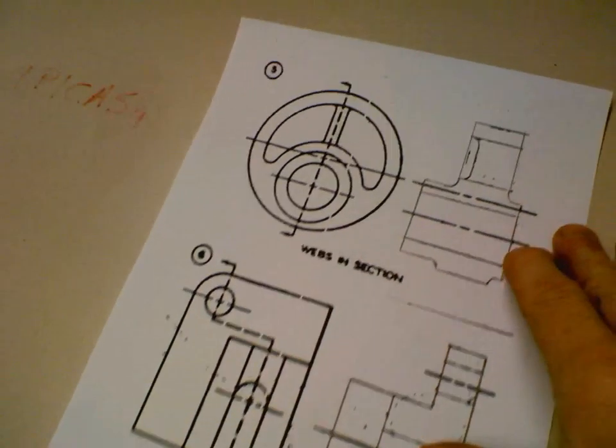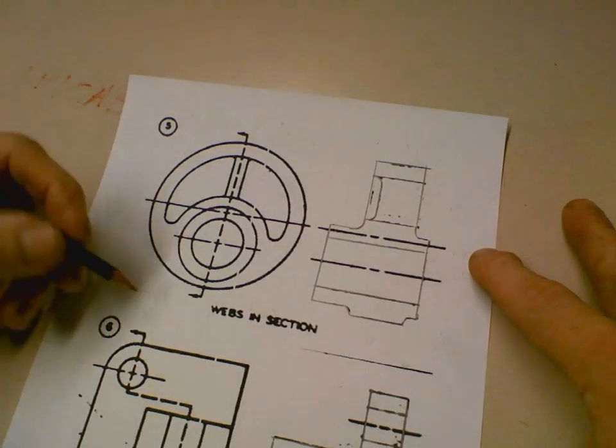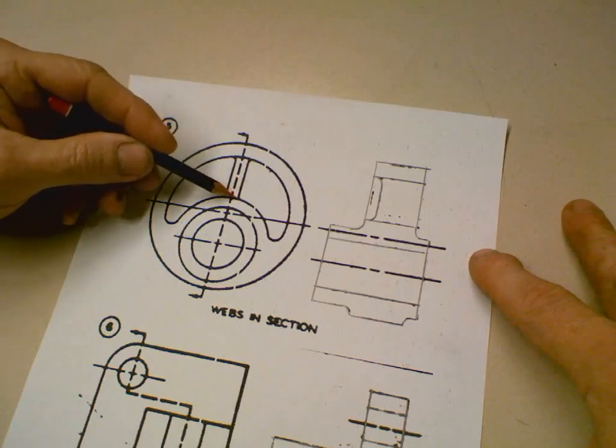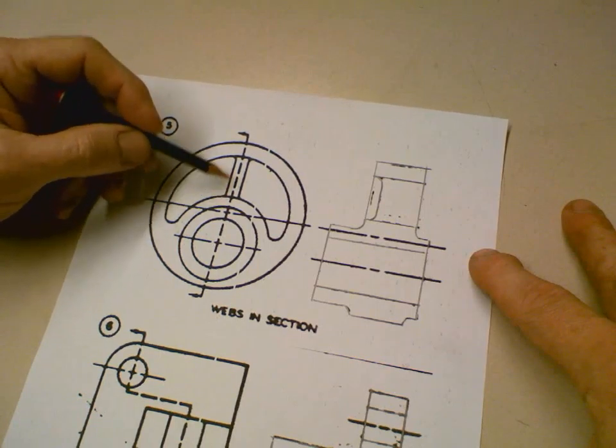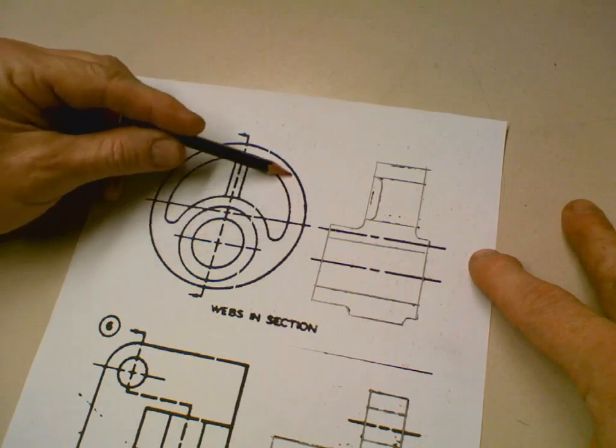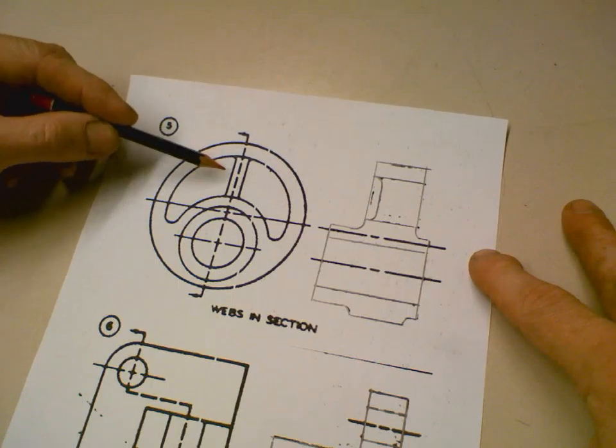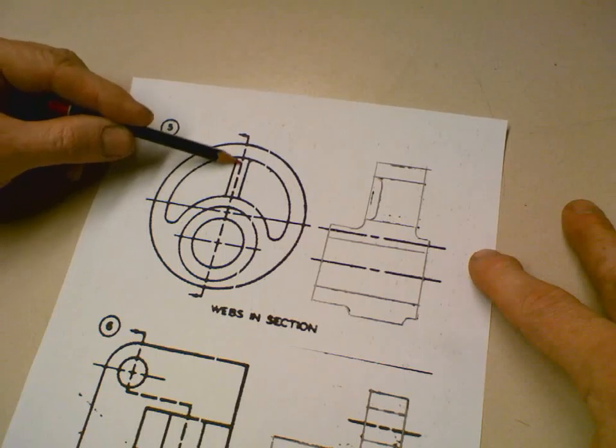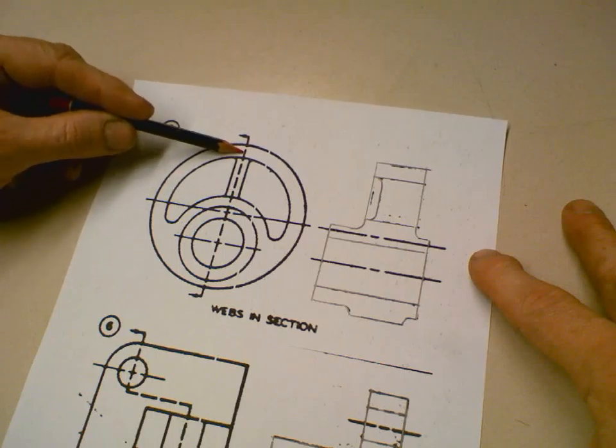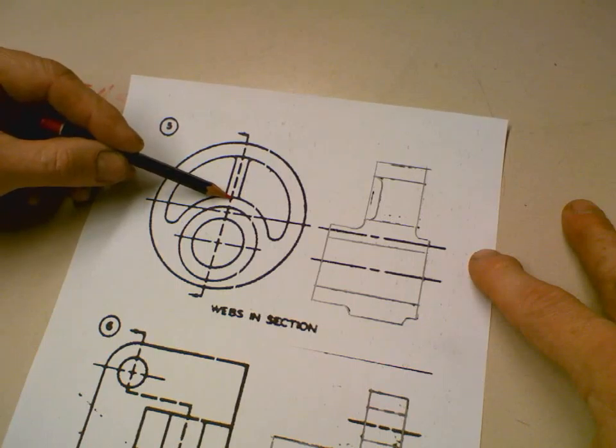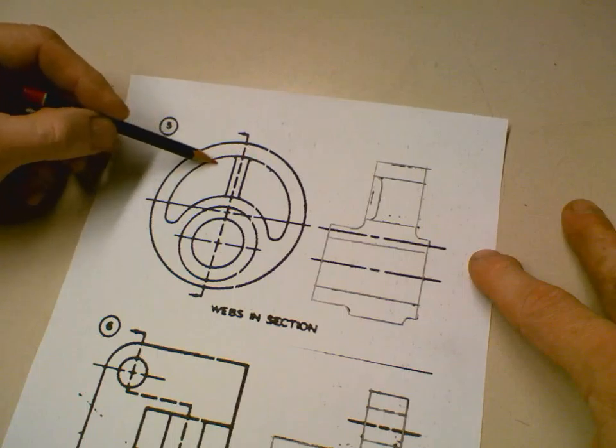So let's look at number 5. This is webs in section. A web is this right here, and its duty is to support this material that's out here unsupported. If this little rib or web wasn't in there, this would be weak. So they've attached the material from the base or from this center body up here to this outer shell.